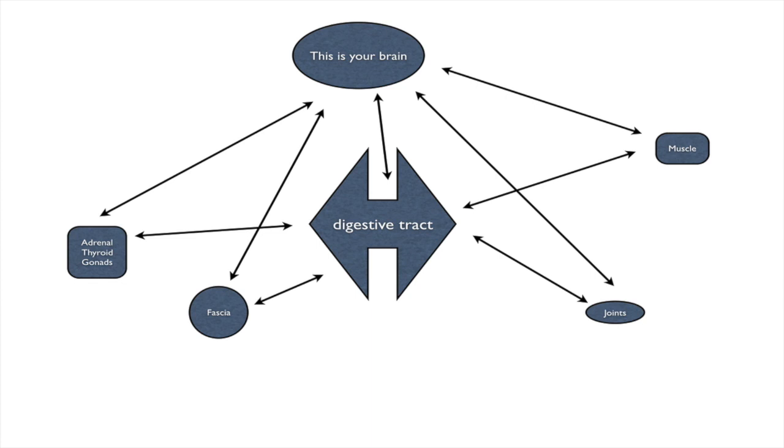So if you have one problem in one area, such as the digestive tract, you can change the entire system. Think about this like a spider web. If you break one part of a spider web, what happens to the web? The whole thing changes shape, doesn't it?